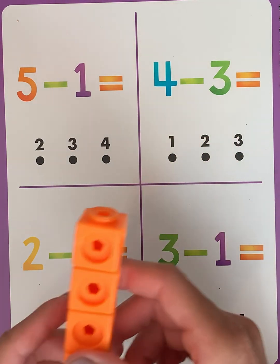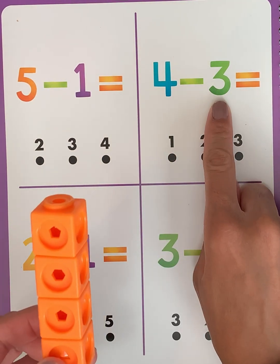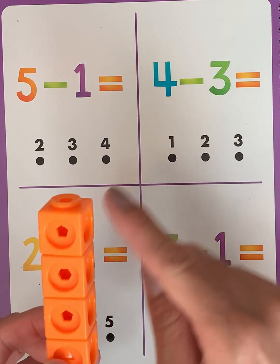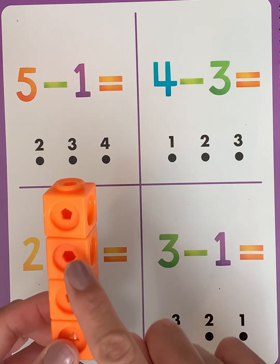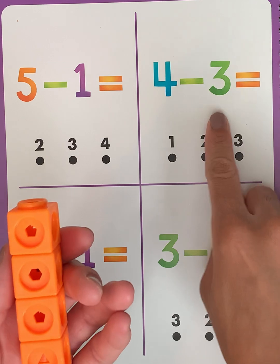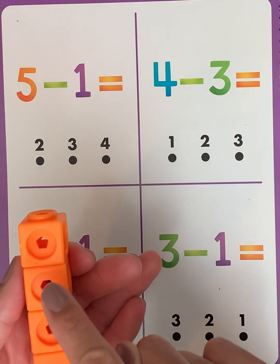And we are taking away 3. So we want to know what that equals. So we have 4: 1, 2, 3, 4. And now we want to take away 3: 1, 2, 3.